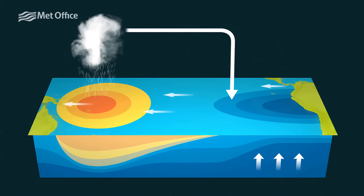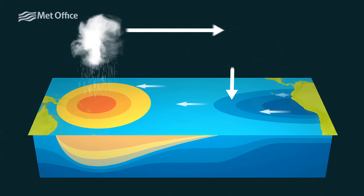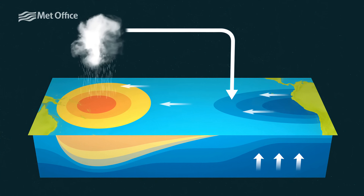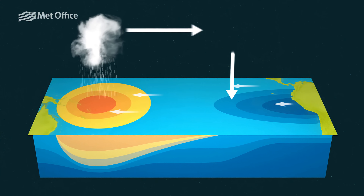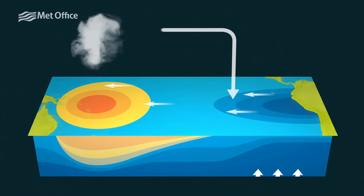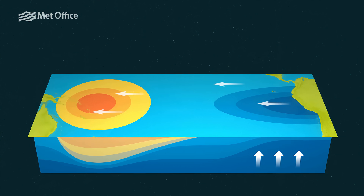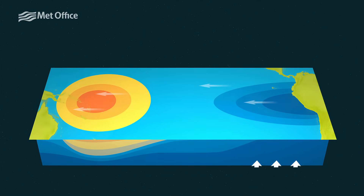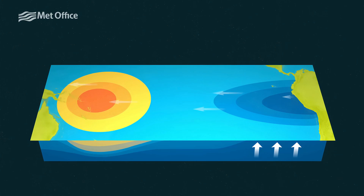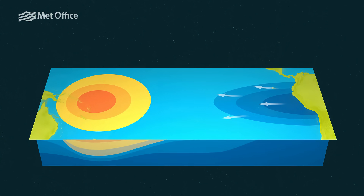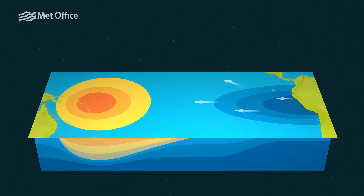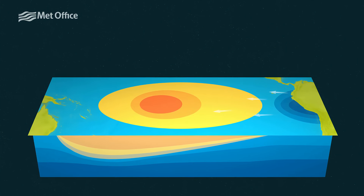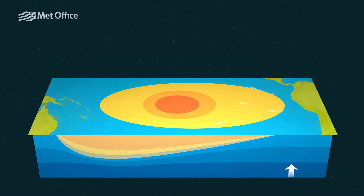If conditions are right, tropical Pacific weather systems, or slow changes in the ocean around the equator, can set off a chain of events which weaken or even reverse the usual trade winds. With weakened trade winds, there's less push of warm surface water to the western side of the ocean, and less upwelling of cold water on the eastern side. This allows the usually colder parts of the ocean to warm, cancelling out the normal temperature difference.